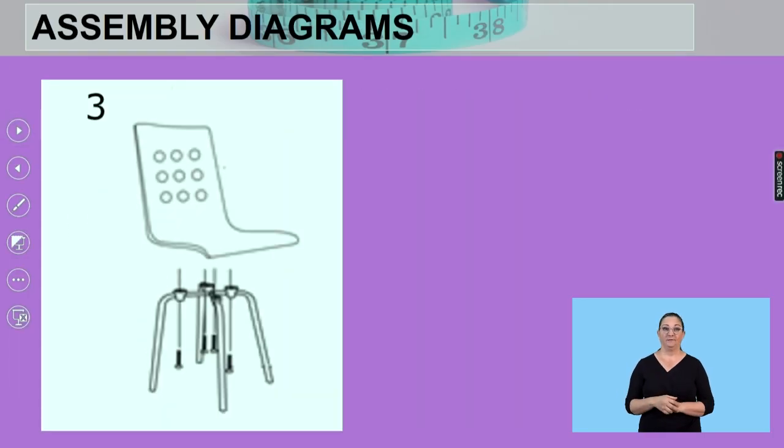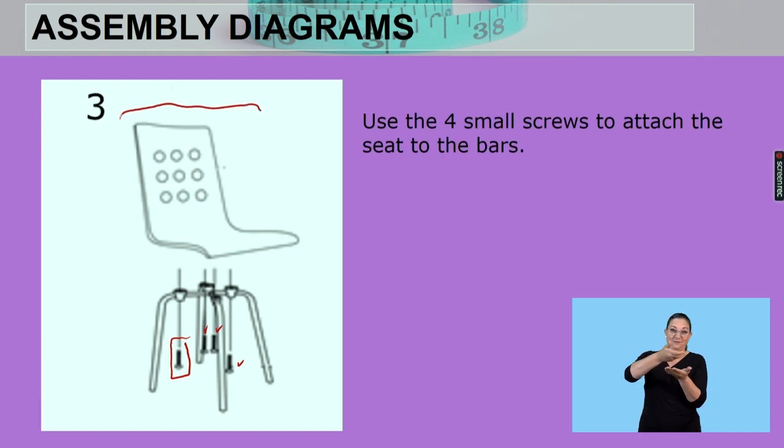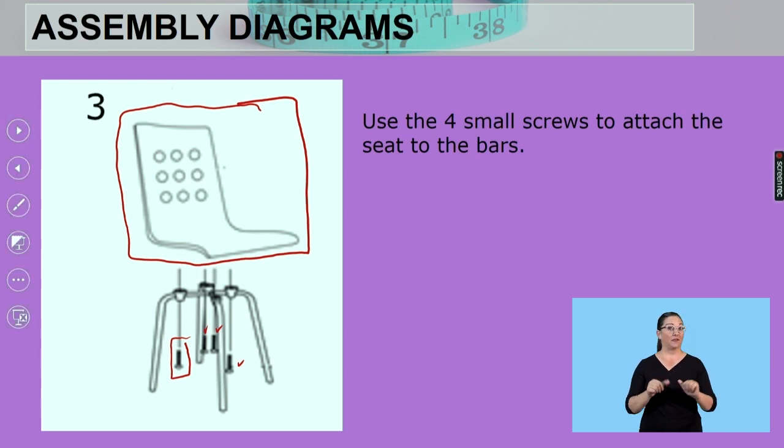Step three. So looking at this, what exactly is going on here? A few things. We are using the four small screws. Here they are. Those little guys. There's one, two, three, four of them. Use those four screws to attach the seat. Here it is. So this chair is taking shape. To attach the seat to those bars that we've already assembled. And then the chair is complete. So that's how we would follow these instructions to build one office chair.